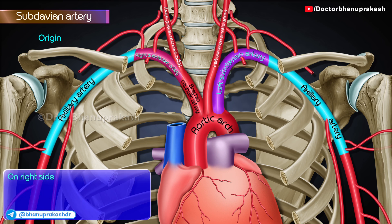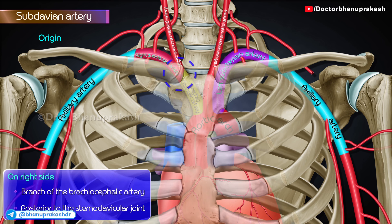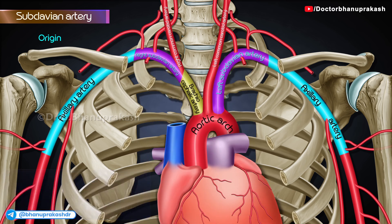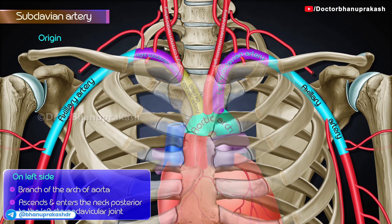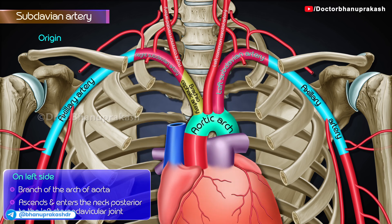Origin. On the right side, it is a branch of the brachiocephalic artery. It arises posterior to the sternoclavicular joint. On the left side, it is a branch of the arch of the aorta. It ascends and enters the neck posterior to the left sternoclavicular joint. Both arteries pursue a similar course in the neck.